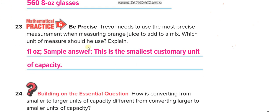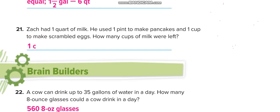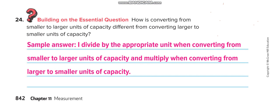Which is the most precise measurement unit? Fluid ounces — the smallest one. I hope you guys understand the lesson. Don't forget to like this video and send me the homework.